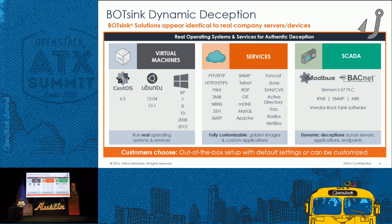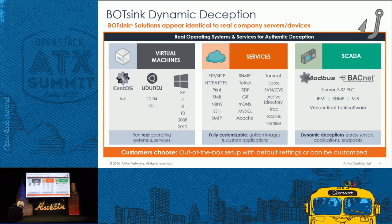We allow you to customize not only the content of the systems, but also install your own programs, open your own specific ports and custom ports, as well as import your own golden images of the operating system to run inside our environment to use as engagement servers. Our VMs that engage and detect those attackers are completely transparent in your network and look exactly the same as the rest of your network.